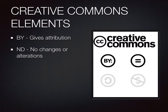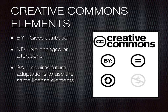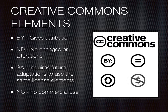A work with the ND element in the license cannot be changed in any way. The third element is the Share Alike or SA, indicated by the circle with a circular arrow, which requires future adaptations or changes to the work to use the same licensing elements as in the original. The last element is the Non-Commercial element, or NC, shown by a dollar sign with a circle strike-through. When this is present, any future uses of the work cannot be used to earn money or make any sort of profit.